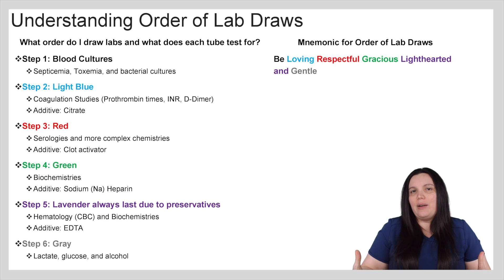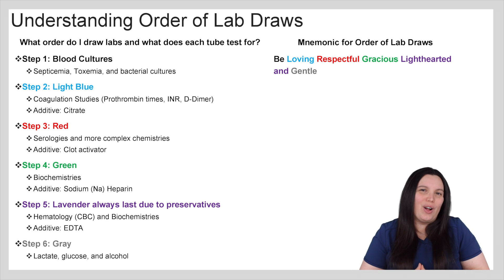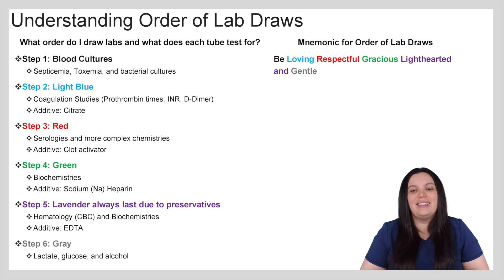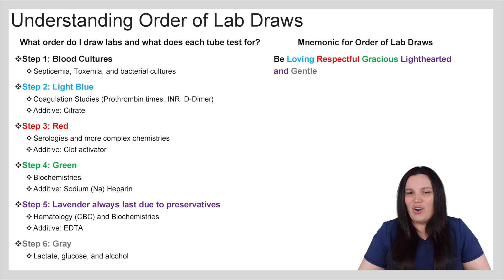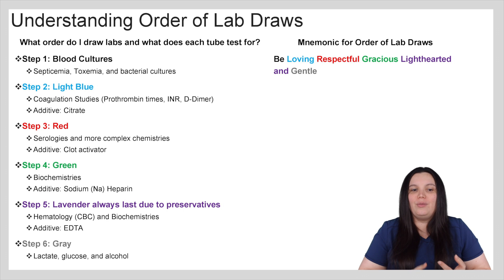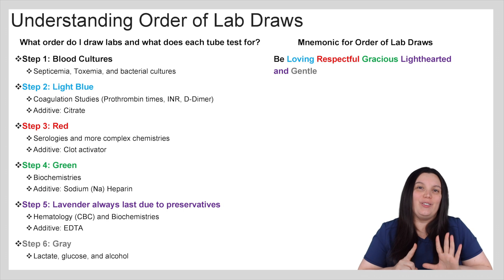The big mnemonic that we use in order to remember how to draw these labs appropriately is: be loving, respectful, gracious, lighthearted, and gentle — standing for Black, Blue, Red, Green, Lavender, and Gray.